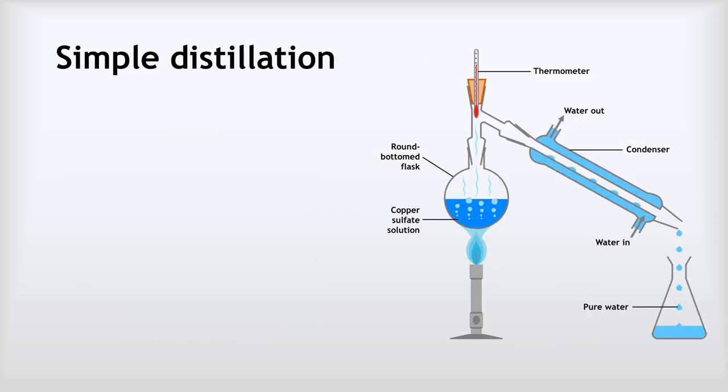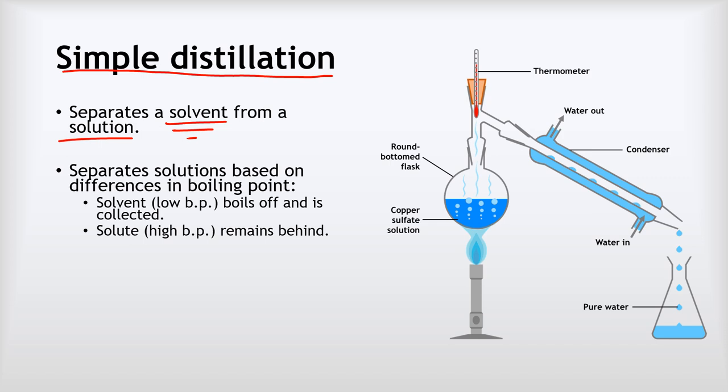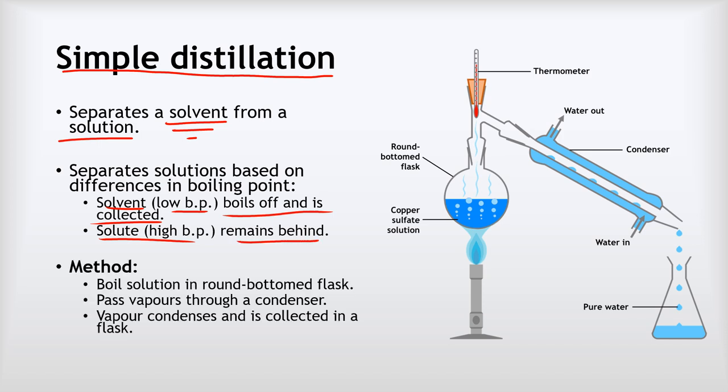The next method is called simple distillation, and this separates the solvent from the solution, so it allows us to collect the solvent. Compare that to crystallization where the solvent just boils away. Again, this uses differences in boiling points. Generally, our solvent has a lower boiling point and boils off and is collected, and our solute has a high boiling point and remains behind.